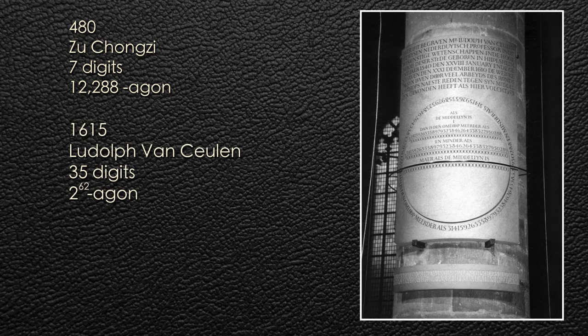In 1615, Ludolph van Ceulen got out to 35 digits with a 2 to the 62nd power-agon. This was considered such an accomplishment at the time that they actually had the numbers engraved on his tombstone. And for a while, pi was known as the Ludolphine constant.